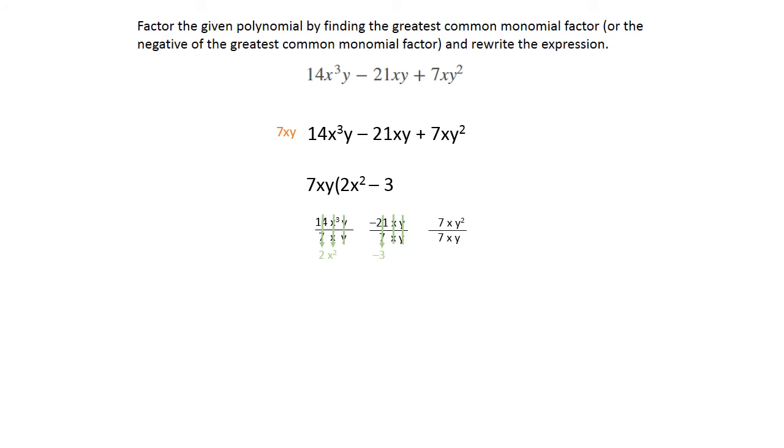In the third term, we're looking at the 7xy². The 7's cancel, the x's cancel, and subtract those y's. 2 minus 1 is just 1y. That is positive, so we're going to do plus y.